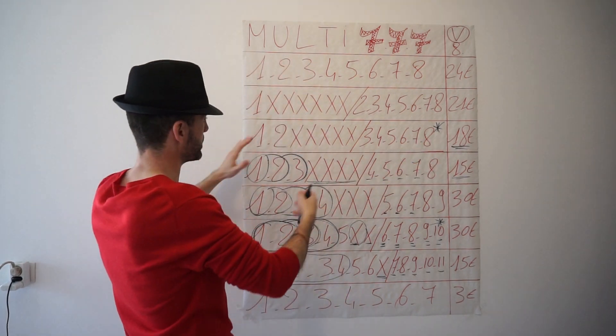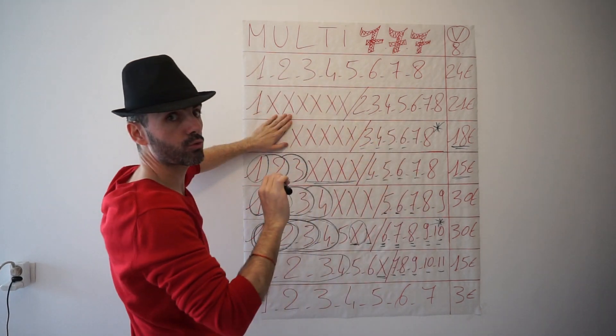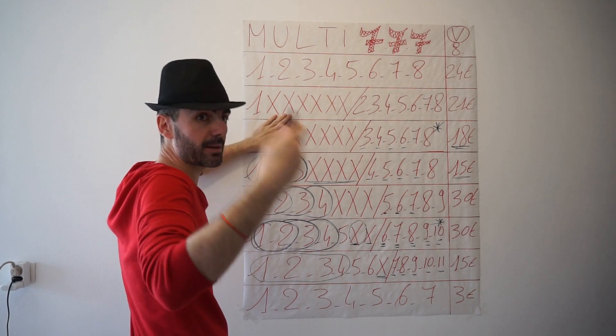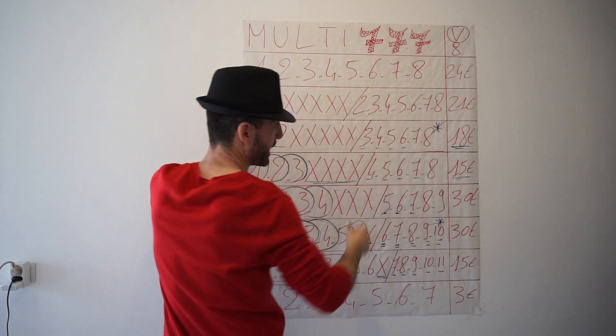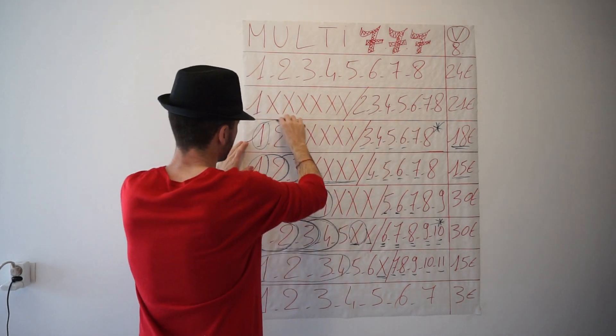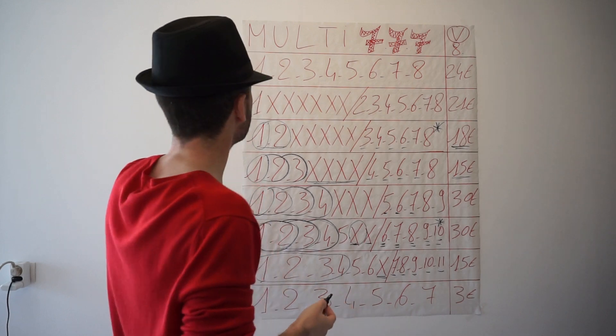Même système. Si nous n'avons pas la base et que derrière nous avons les quatre, on touche une seule fois. Vous avez vu, c'est quand même souvent répétitif. Dès qu'on a compris le système : un de base et trois derrière, on touche une fois. Deux de base et deux derrière, on touche plusieurs fois.